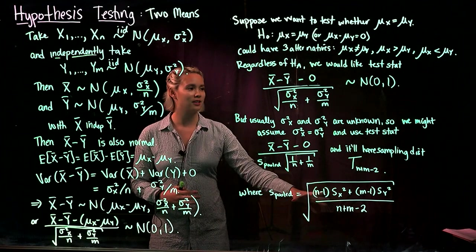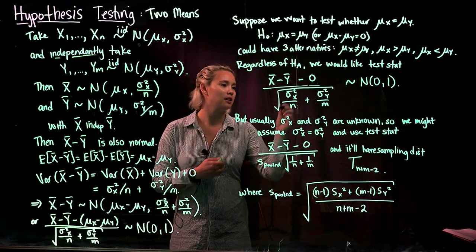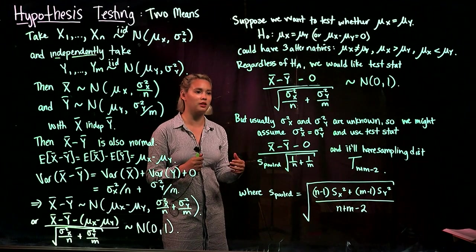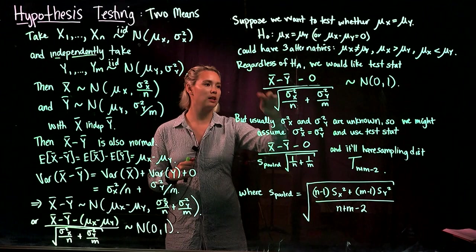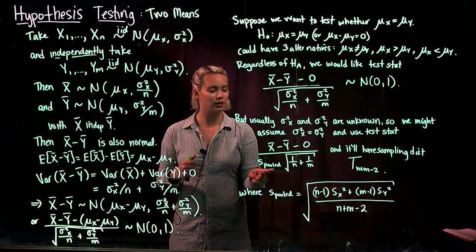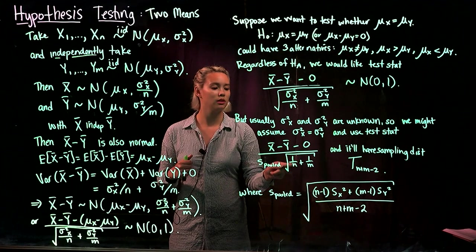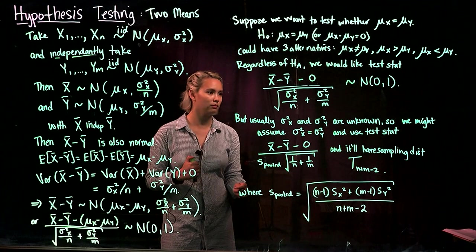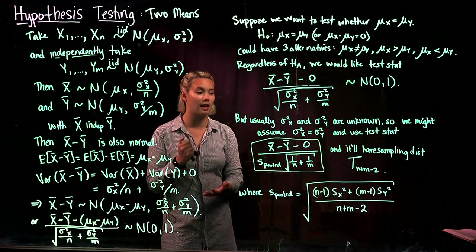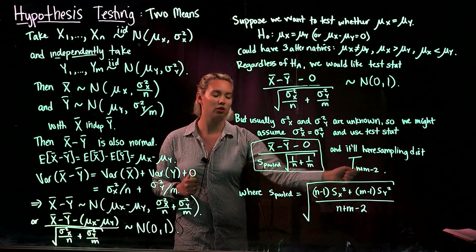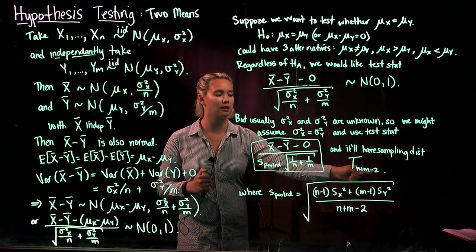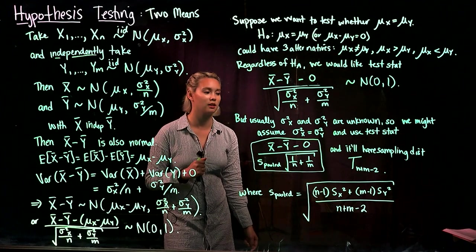We use the pooled sample standard deviation in place of sigma squared x and sigma squared y. Plugging it in, the test statistic becomes x̄ minus ȳ divided by the pooled sample standard deviation times the square root of 1 over n plus 1 over m. This test statistic has a t-distribution with n plus m minus 2 degrees of freedom.